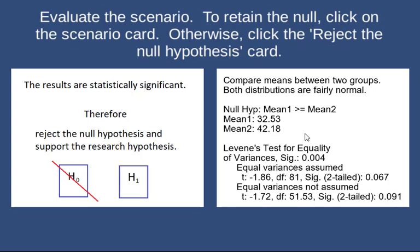This is a one-tail test. Looking at the evidence, the evidence actually goes the opposite way. The mean for group 1 is 32.53 and the mean for group 2 is 42.18. So it's worthwhile to keep going through this process and see if we reject the null.